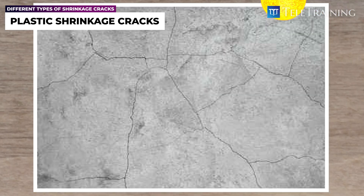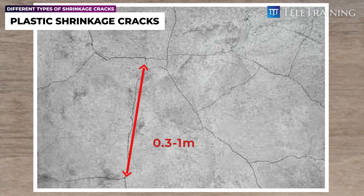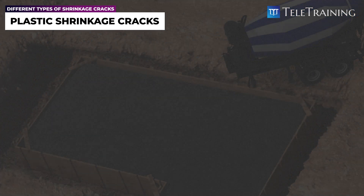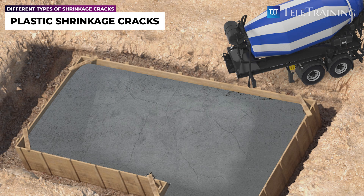Plastic shrinkage cracks are typically short, ranging from 30 centimeters to 1 meter in length, and appear randomly distributed across the surface of the concrete. While these cracks may not be immediately visible on the day of pouring, they often appear within the next day.